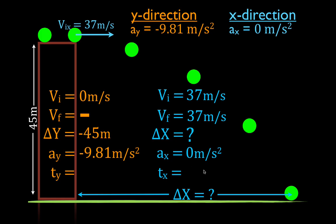You'll notice we have the time in both the x and the y-direction, and we don't know either of those. An important thing to keep in mind is that the time in the x and the time in the y are the same — the object is moving independently in both directions simultaneously. The time it takes to fall in the y and the time it takes to travel in the x-direction are equal. We can't find time directly from the x information, but we can solve for time in the y-direction and then use that same time for the x-direction.